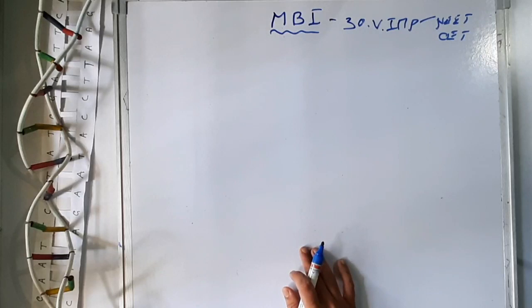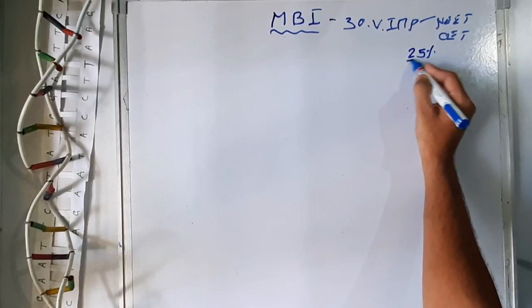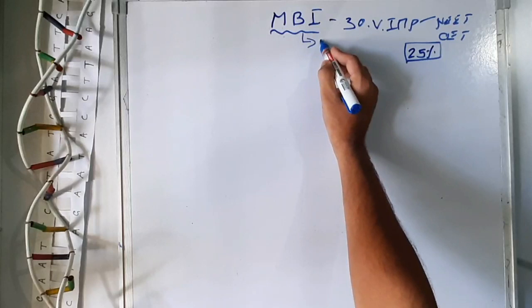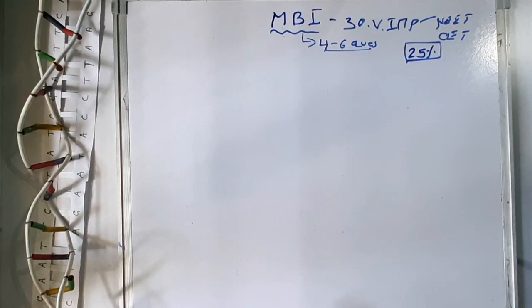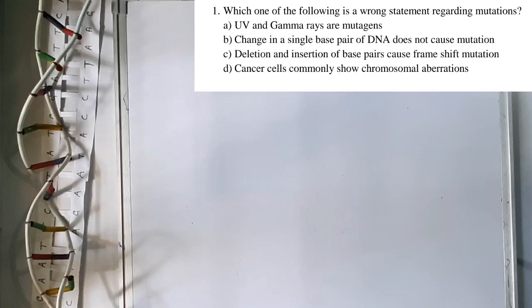In this particular session, I'm going to deal with 30 very important MCQs of the chapter Molecular Basis of Inheritance. It is the second chapter in the unit Genetics in your 12th standard. In the NEAT examination, if you see the previous year question paper, you can score 25% of the marks from this unit Genetics. Particularly from Molecular Basis of Inheritance, you can expect 4 to 6 MCQs.